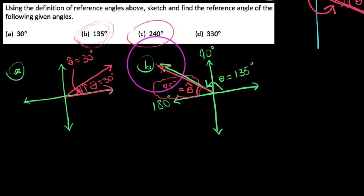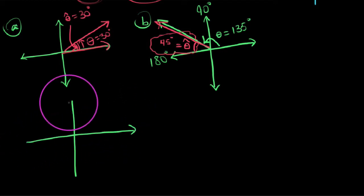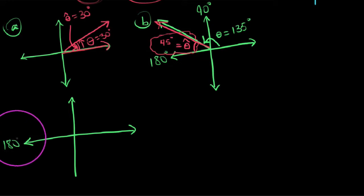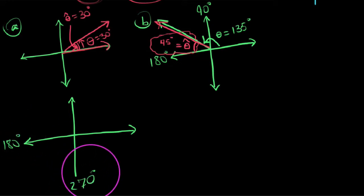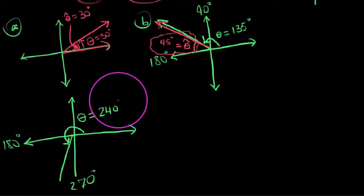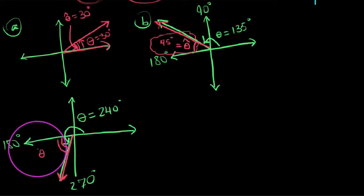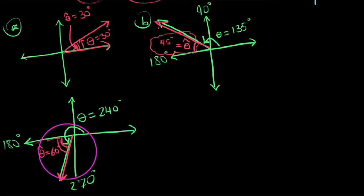Example C: 240 degrees — that's in the third quadrant. To get there, I'd go at least 180 and then another 60 degrees. So here's a 180-degree rotation and then another 60 degrees, giving us our original theta of 240 degrees. The reference angle is formed between this terminal ray and the x-axis, which is this angle right here. So theta party hat — the reference angle — for a 240-degree angle is 60 degrees.